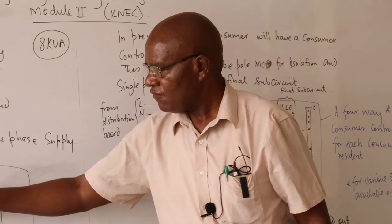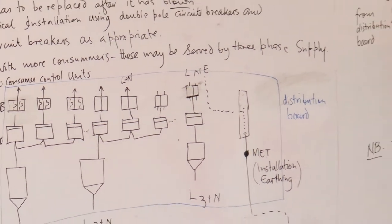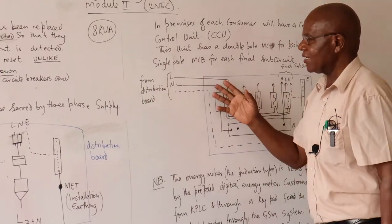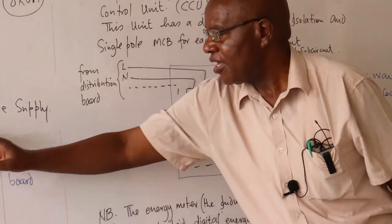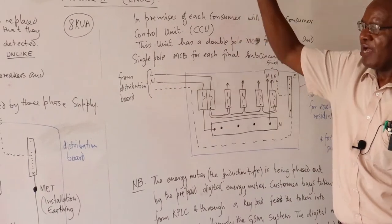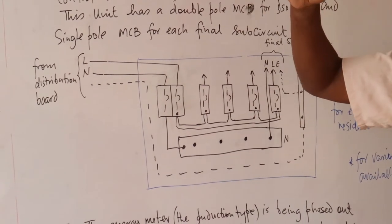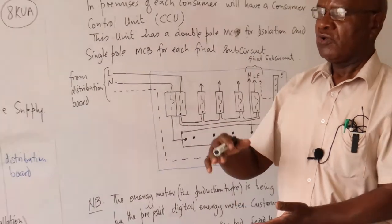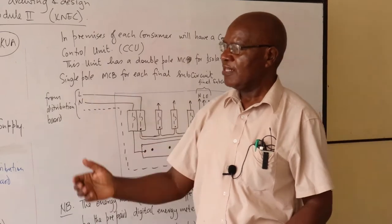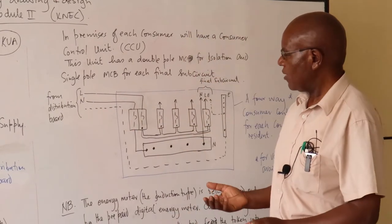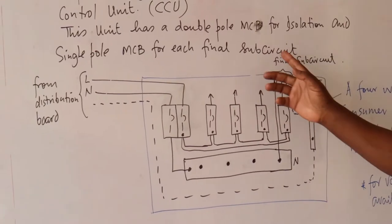The key thing to remember is that the values of these MCBs should be such that they protect the cables against any excess current. So these MCBs will be sized to protect the cable running from the distribution board. In high-rise buildings, there are recommendations — I think it's more than nine meters — where you have to provide support for the cable and also take care of fumes in case there is a fire. All of that is in the IEE regulations.